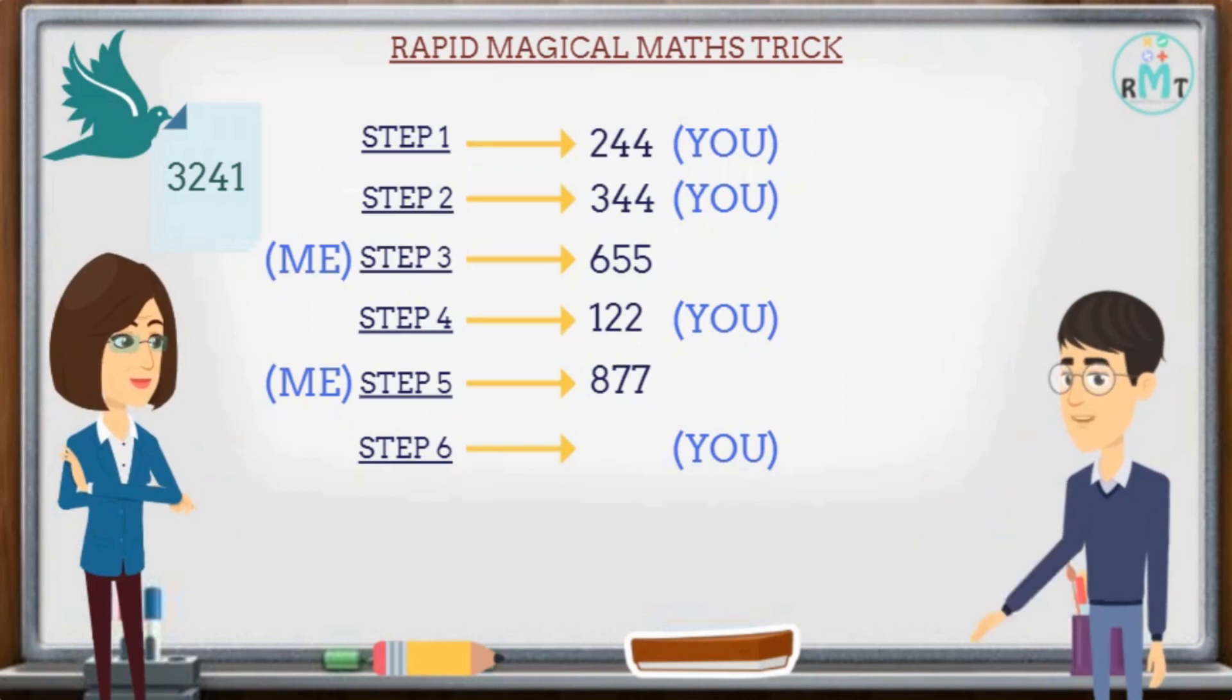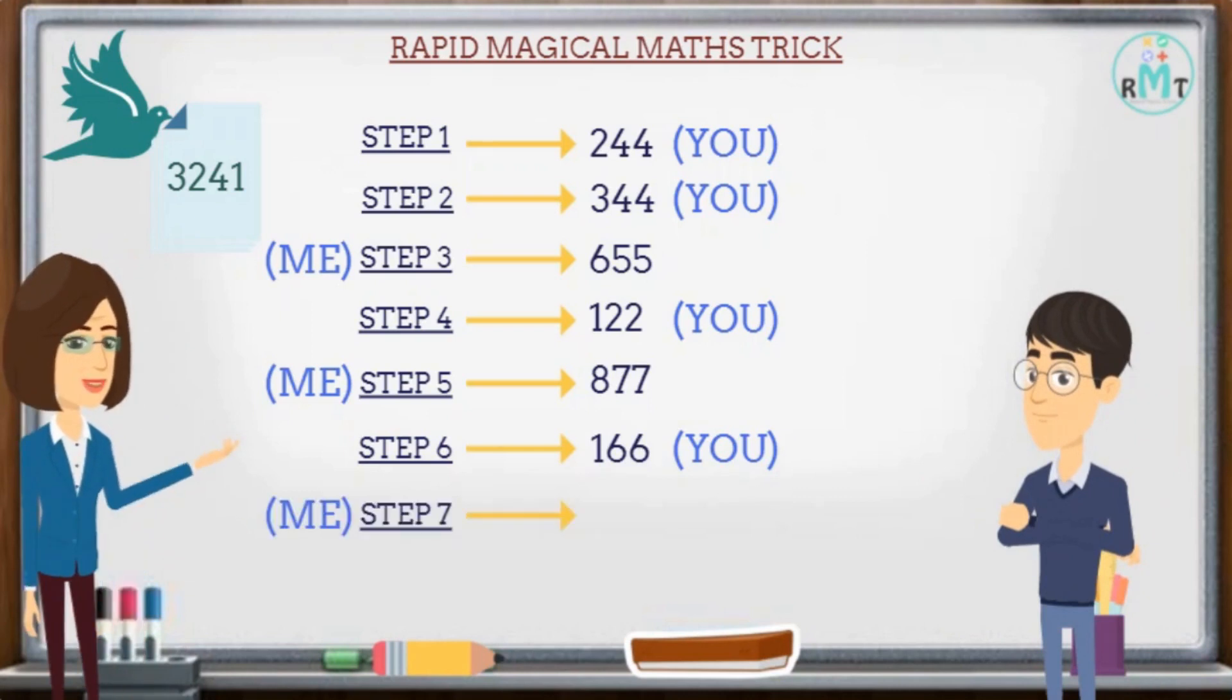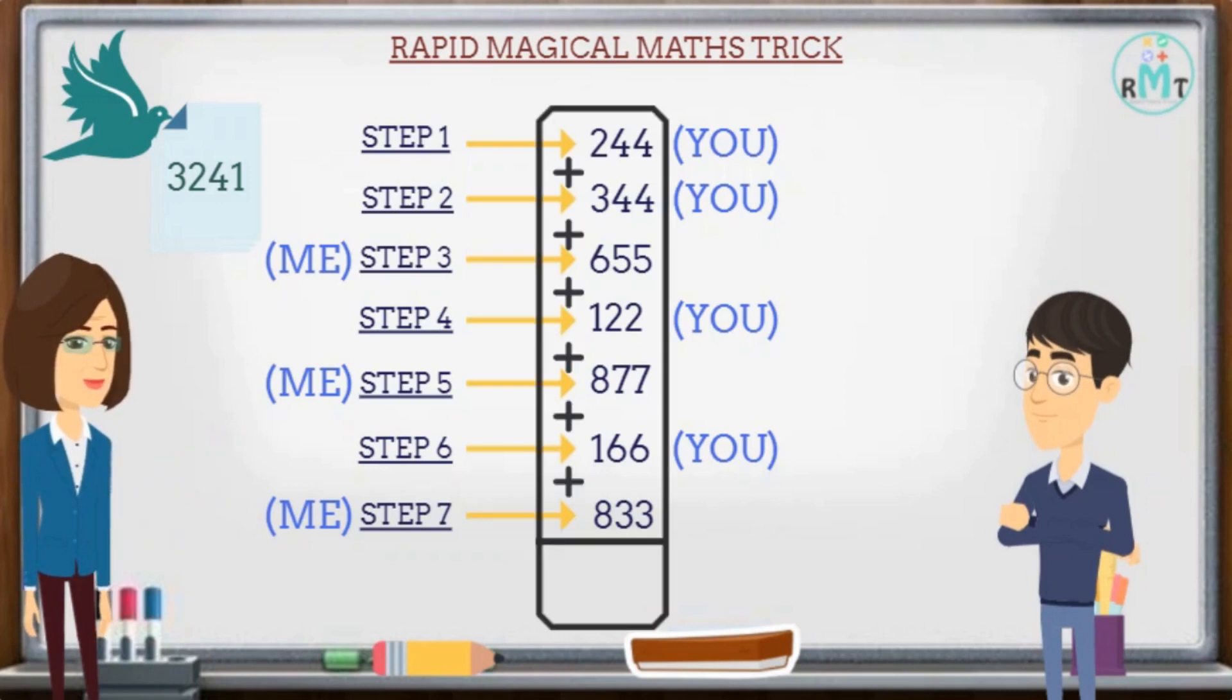the number be 166. Step seven, now I will take the last number, that is 833. Now we will add all the numbers, so the sum is 3241. Let's see the number in this paper and match your sum of numbers.